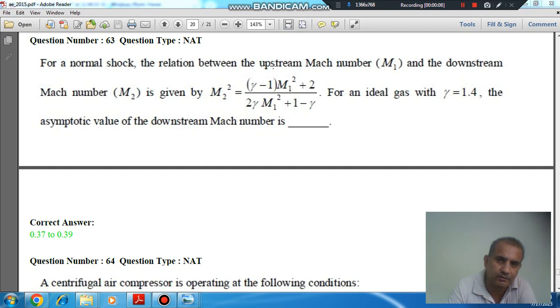For a normal shock, the relation between upstream Mach number M1 and downstream Mach number M2 is given by M2 square equals gamma minus 1 M1 square plus 2 divided by 2 gamma M1 square plus 1 minus gamma. For an ideal gas with gamma equals 1.4, the asymptotic value of downstream Mach number is...